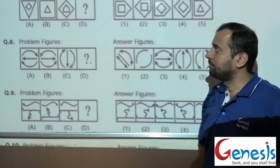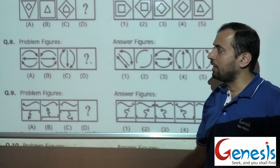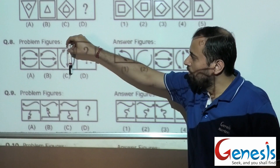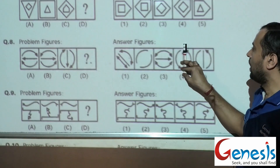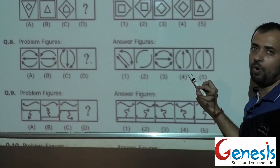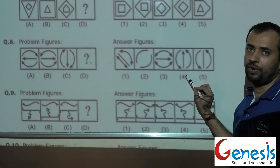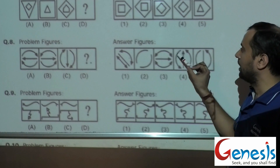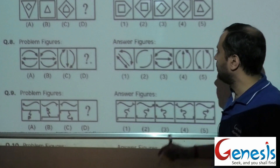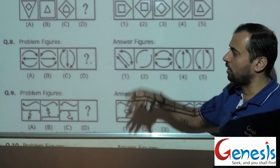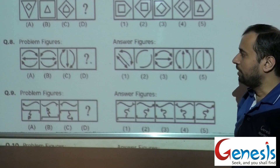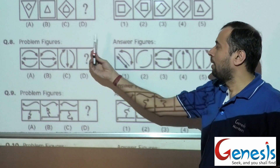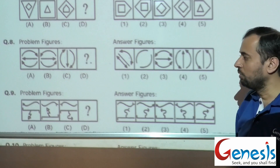Moving on to problem number 8: the arrow has been rotated by 180 degrees. So this arrow would also be rotated by 180 degrees and would point up. Arrow pointing up is only in frame number 4, so I don't need to look at any other answer frame — my correct answer is frame number 4. If you check the other logic also, everything is being rotated. Mirror image and water image both being taken would give these answers. The rotation of this arrow from bottom to top gives the correct answer directly.